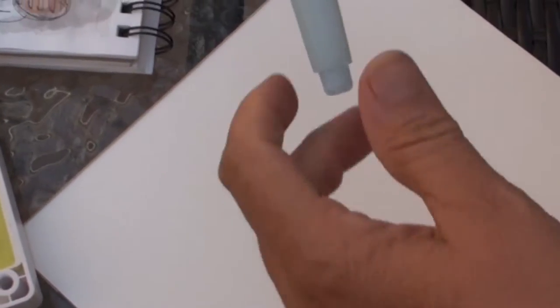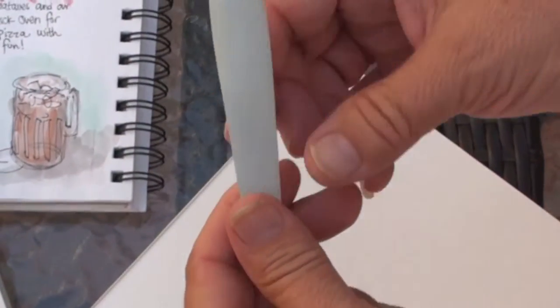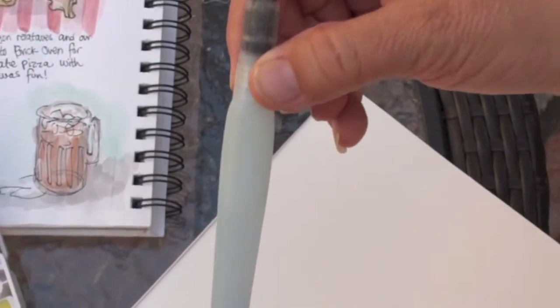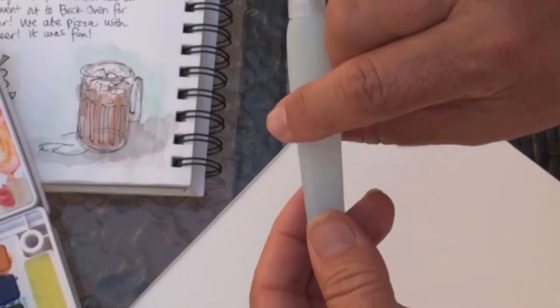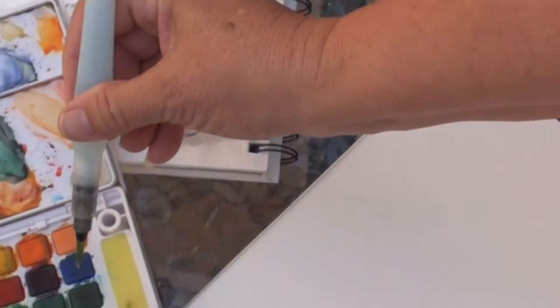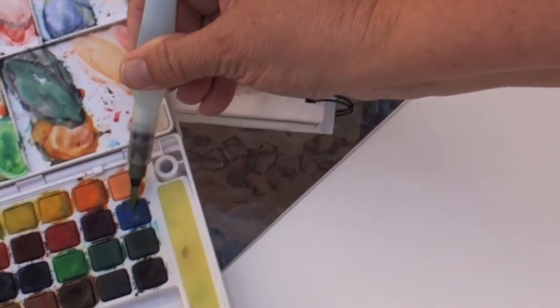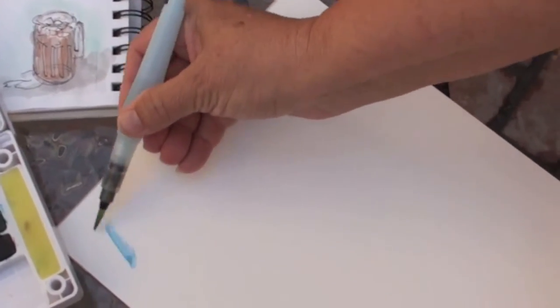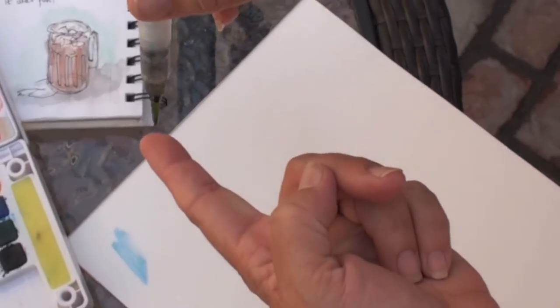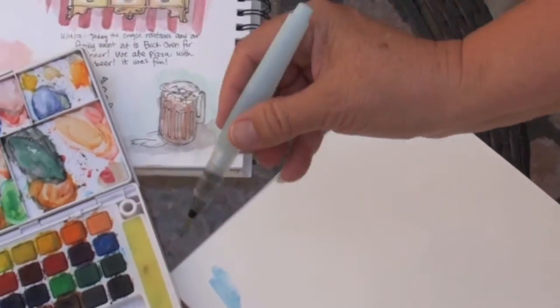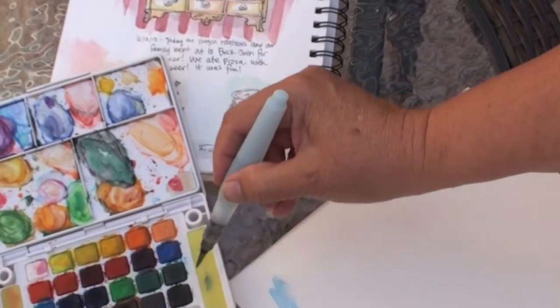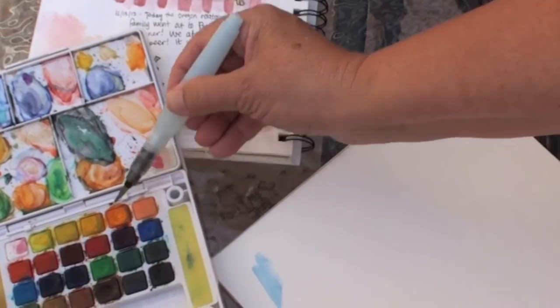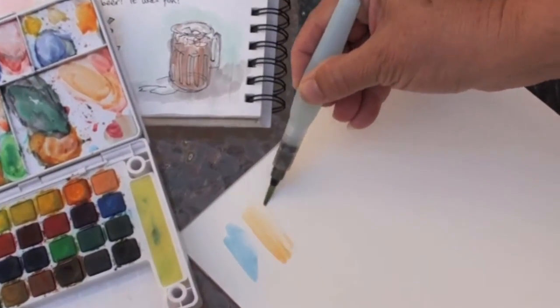So the thing I like so much about this water brush is it has water, a water reservoir, right in the handle. And so when you paint, you actually control the pressure on the handle and control the amount of water that actually comes out of the tip of the brush. So you do not have any need for a cup of water when you paint. Isn't that cool?